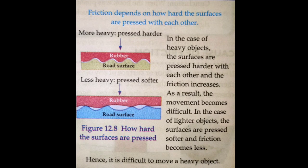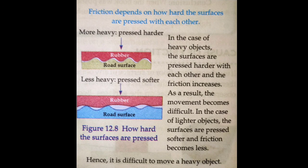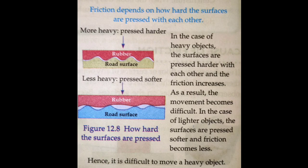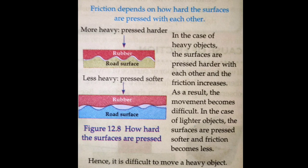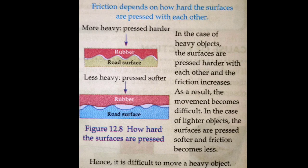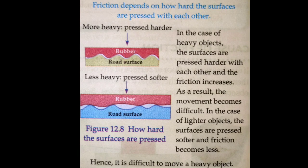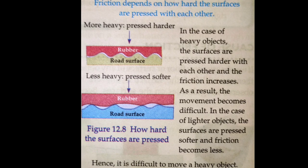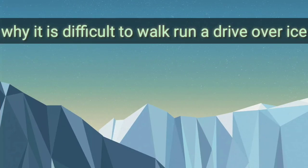Friction depends on how hard the surfaces are pressed with each other. If the object is heavy, the surfaces are pressed harder with each other and the friction will be more. When the mass of the object is more, then the friction will also be more. When the mass of the object is less, it is lighter, and due to the less weight it will press the surface lighter, so the friction will be less and the object will move more easily. On an icy surface, irregularities on the surface are filled with water, which makes the surface smooth and reduces friction. That is why we are not able to walk properly and we slip easily.